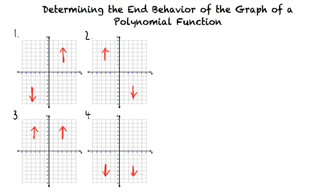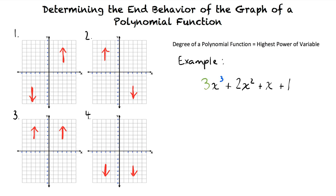The degree of a polynomial function is the highest power to which the variable in the function is raised. For example, the polynomial 3x cubed plus 2x squared plus x plus 1 has a degree of 3, because 3 is the highest power the variable x is raised to. The leading coefficient is the coefficient of the variable with the highest power. So in this polynomial, positive 3 is the leading coefficient.